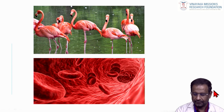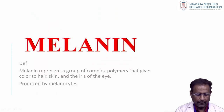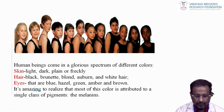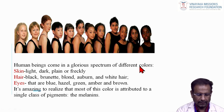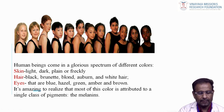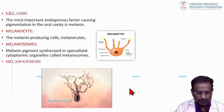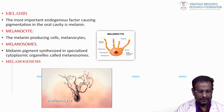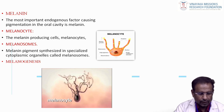RBCs are red in color. Melanin is the most important pigmentation among endogenous types. Human beings come in a glorious spectrum of different colors — skin, hair, and eyes vary from person to person. The most important endogenous factor is melanin pigmentation. The melanin-producing cells are called melanocytes — they are specific cells that produce melanin.